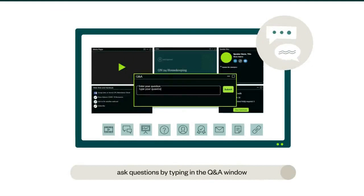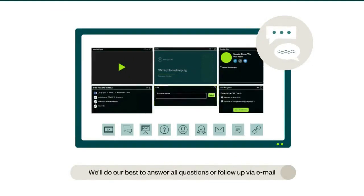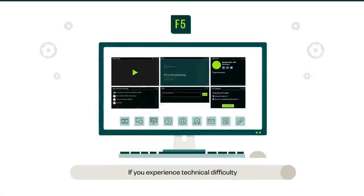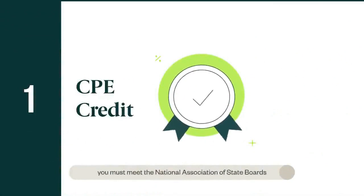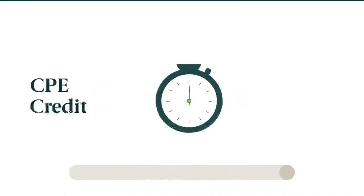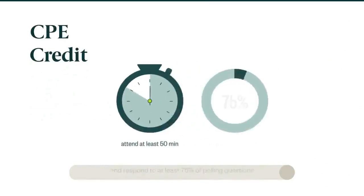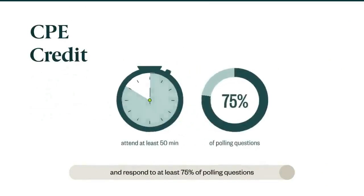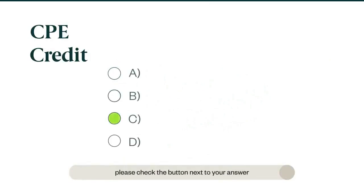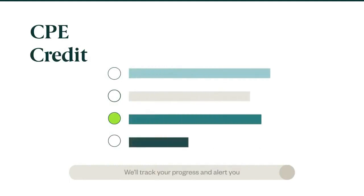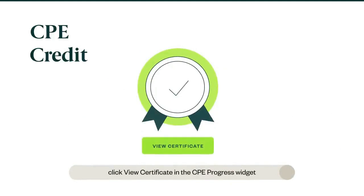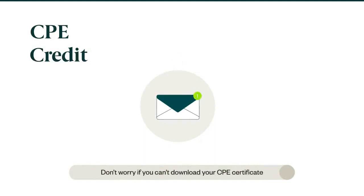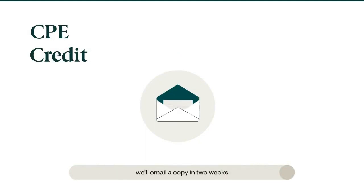You can ask questions by typing in the Q&A window and clicking submit. We'll do our best to answer all questions or follow up via email. If you experience technical difficulty, refresh your browser by hitting the F5 key. Today's session offers one CPE credit. To receive credit, you must meet the National Association of State Boards of Accountancy requirements — attend at least 50 minutes and respond to at least 75% of polling questions. We'll track your progress and alert you when you've earned CPE credit, and you can download your certificate from the CPE progress widget.